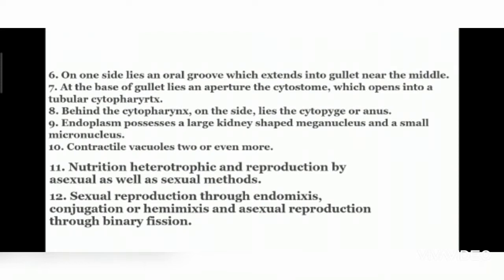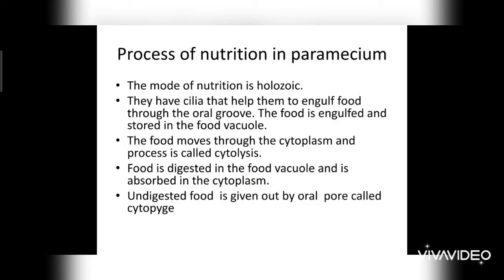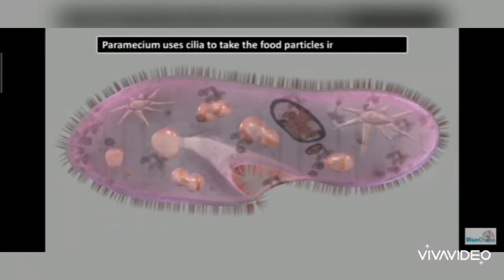In amoeba there is no anus, but here in paramecium, the cytopyge serves as the anus. The endoplasm possesses a large kidney-shaped macronucleus and a small micronucleus. Contractile vacuoles are two or more in number. Nutrition is heterotrophic and reproduction is either sexual or asexual. Sexual reproduction occurs through endomixis, conjugation, or hemomixis, whereas asexual reproduction occurs through binary fission.